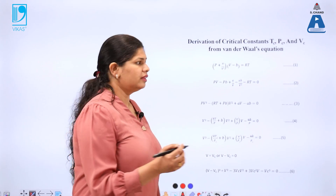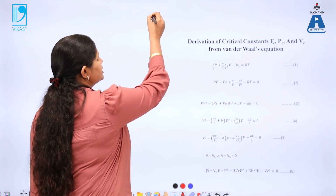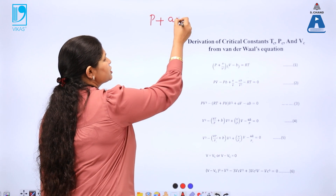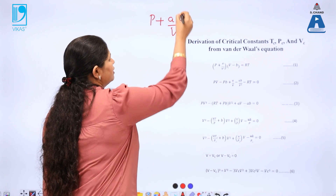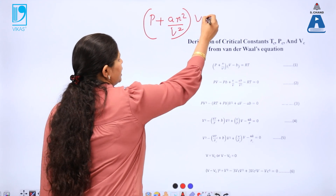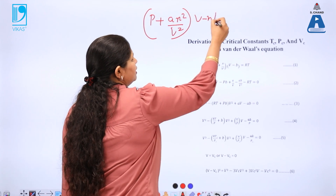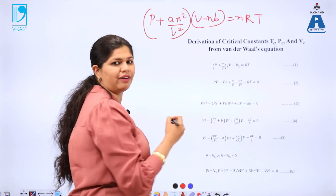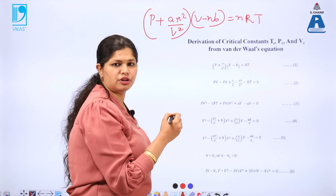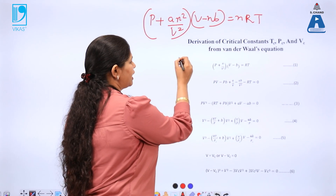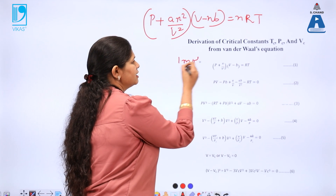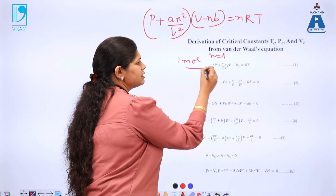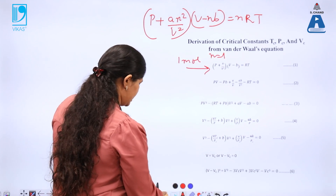The Van der Waals equation of state is: (P + An²/V²)(V − nB) = nRT. Writing the Van der Waals equation of state for one mole of a gas, we set n equal to 1 to get our working equation of state.